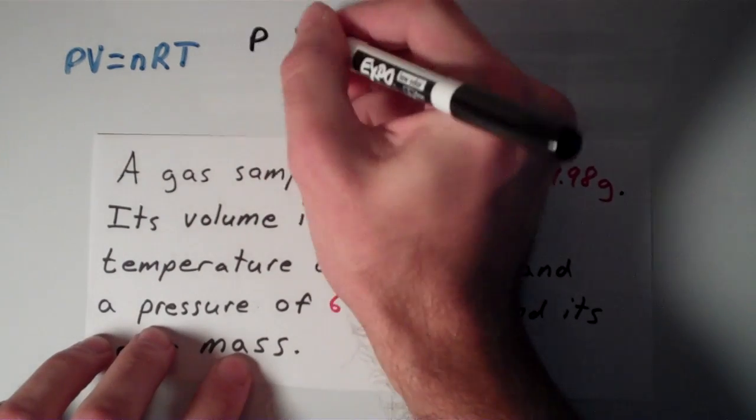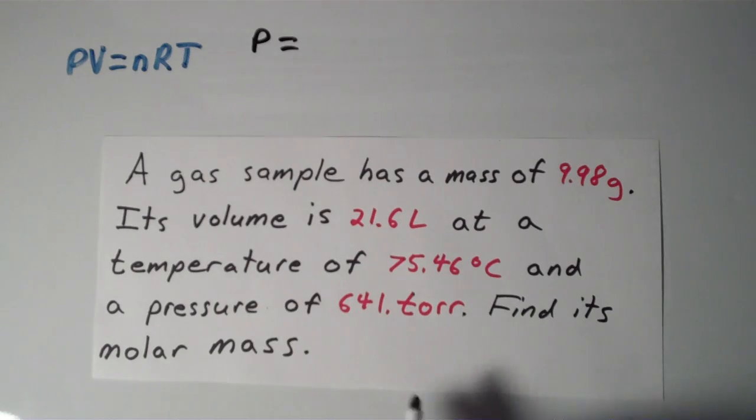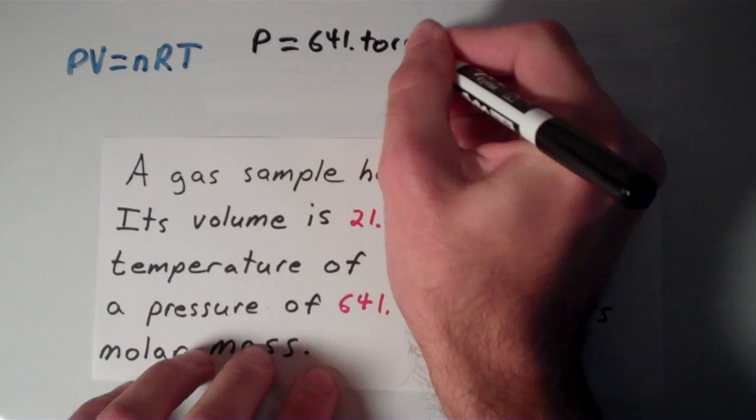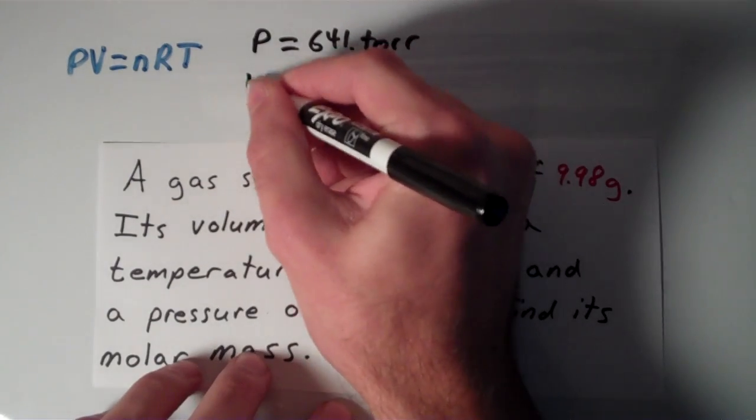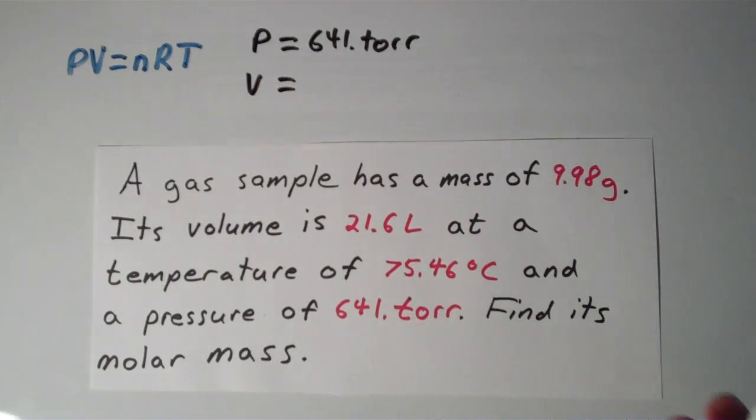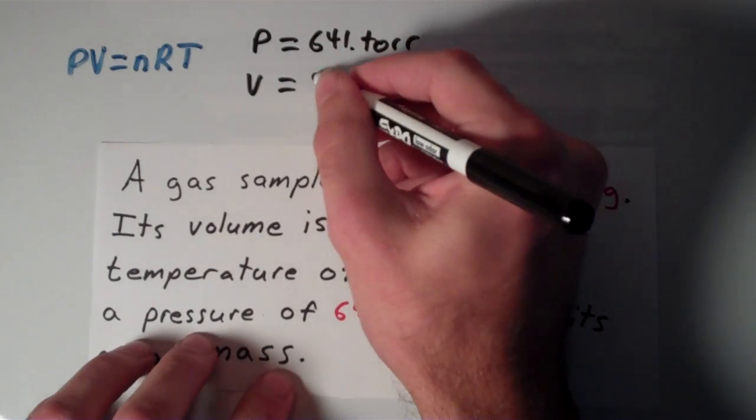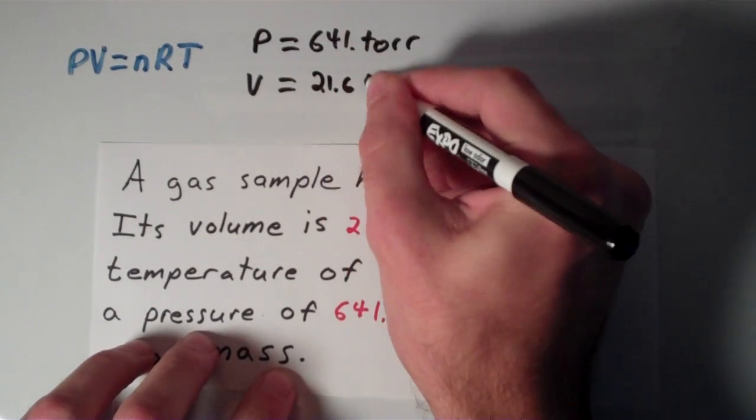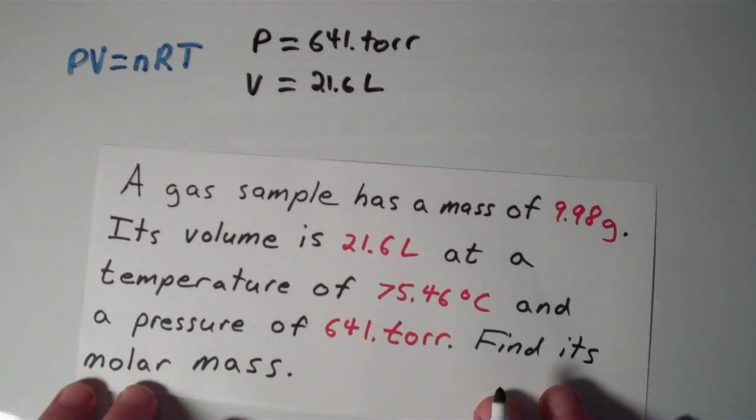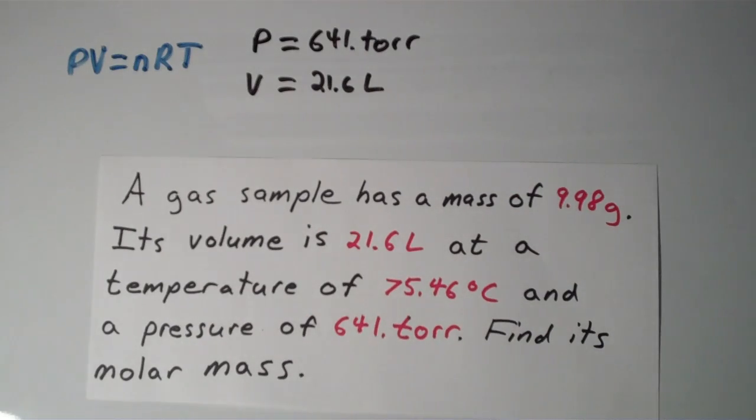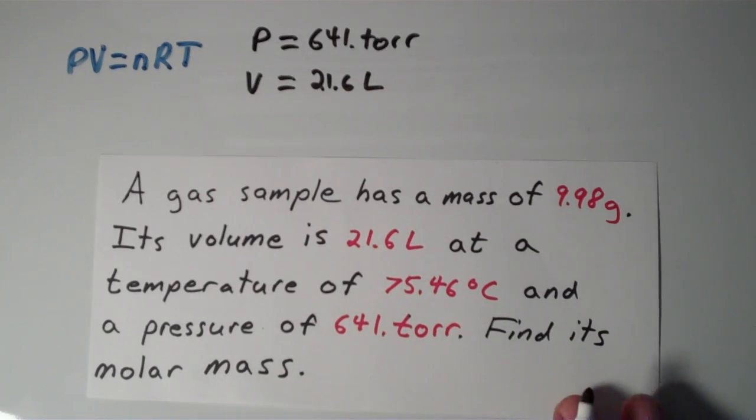my P pressure is 641 torr. My volume, which is also given, is 21.6 liters. My amount in moles, that doesn't appear to be given anywhere, so I'll skip that one for now.